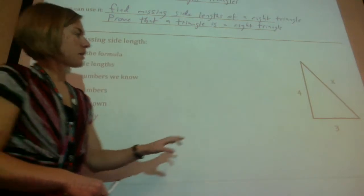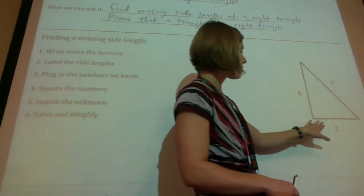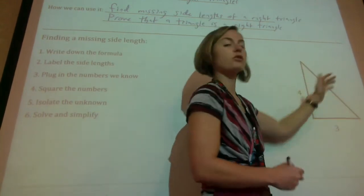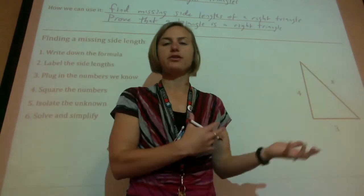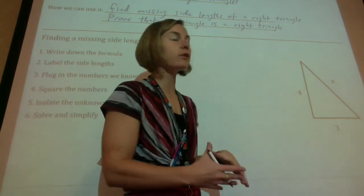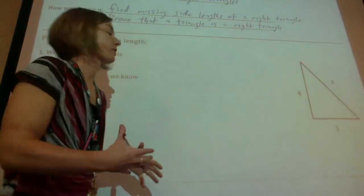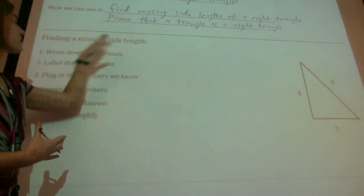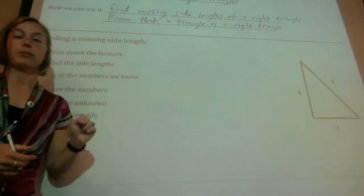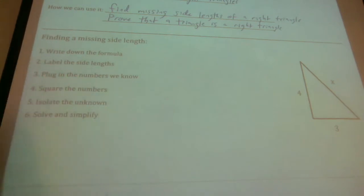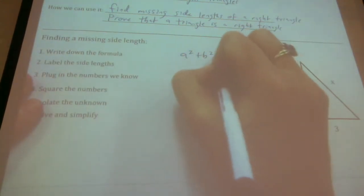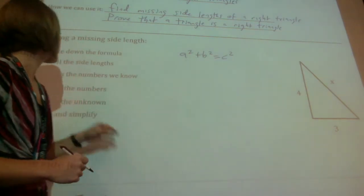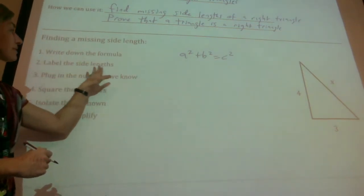So here we have a triangle. We have a side of 3, a side of 4, and a side that's unknown, normally labeled as X. To find a missing side length, first we need to write down our formula — A squared plus B squared equals C squared. Step two: label the side lengths by A, B, and C.